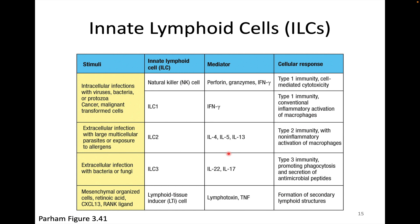NK cells have a lot of similarities to CD8 T cells — they are the ILC parallel of a CD8 T cell. ILC1s are the parallel of Th1 cells. ILC2s are a parallel of Th2 cells. ILC3s seem to be parallels of Th17 cells. We see the same effector cytokines and transcription factors. The big difference is whether we are seeing an antigen-specific response.